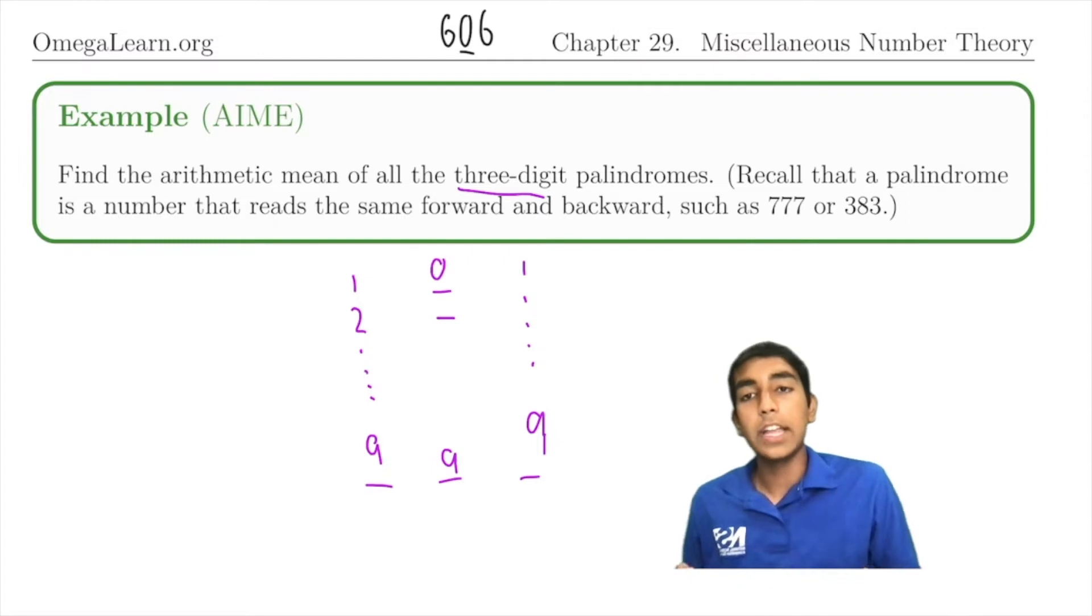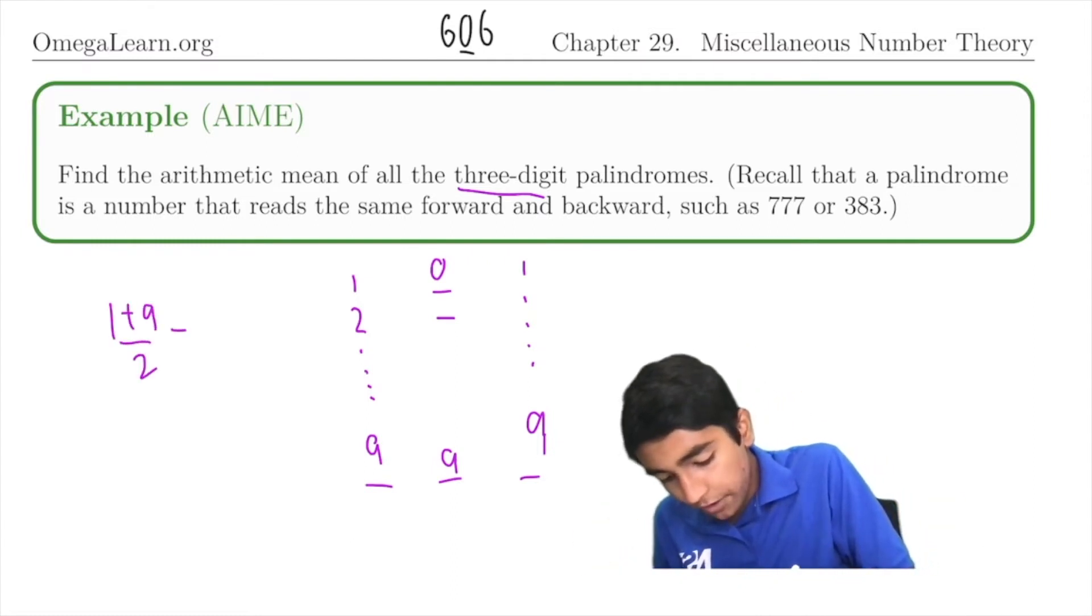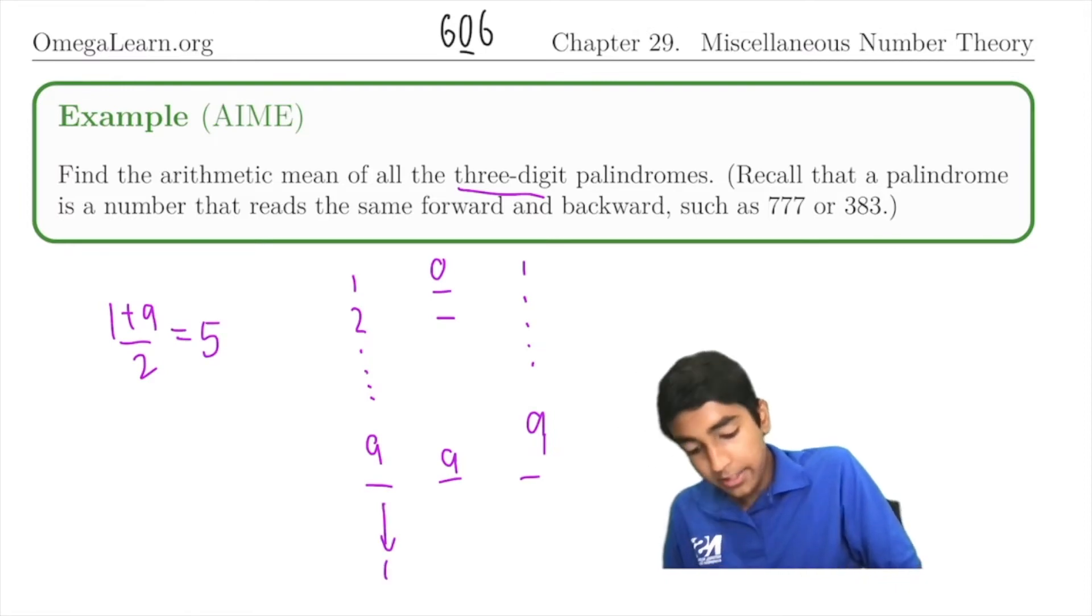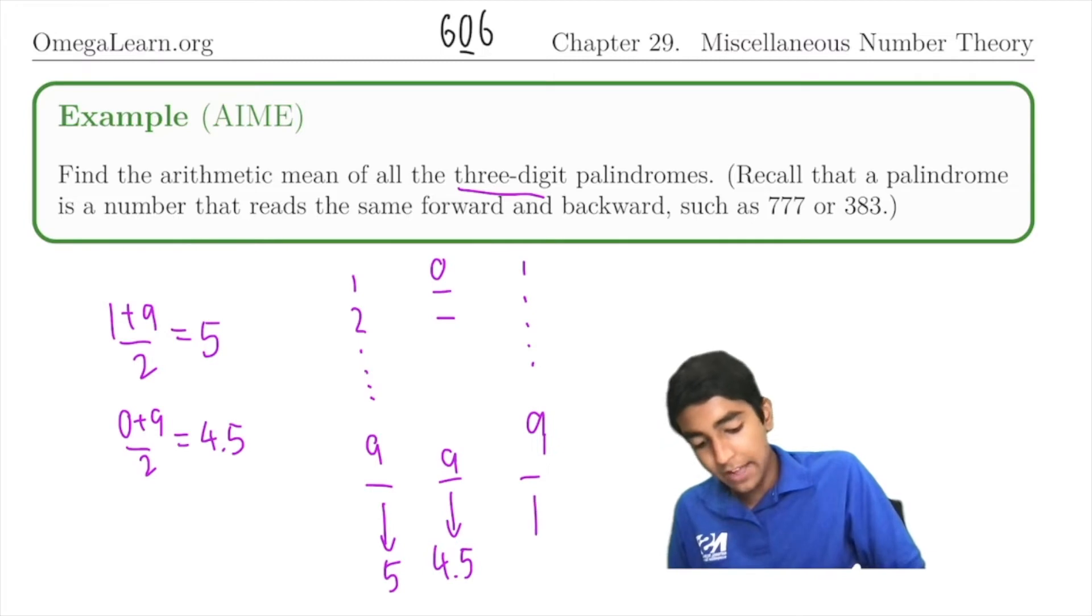What's the average value of each digit? The first digit, well, the average value is (1 + 9)/2 = 5. The second digit is 4.5, (0 + 9)/2. And the third digit has to be the same as the first digit, so just 5 again.